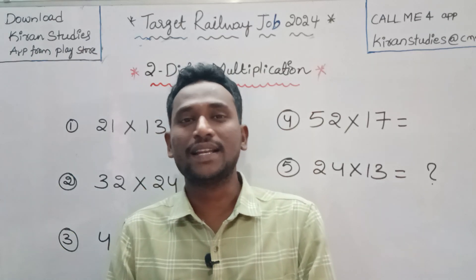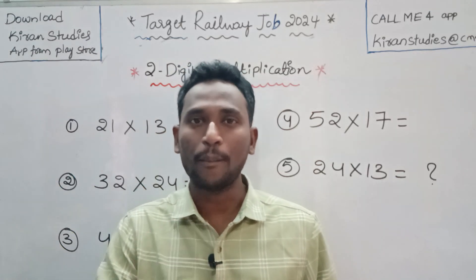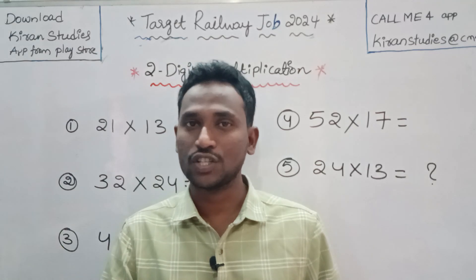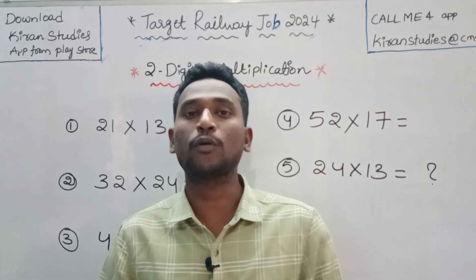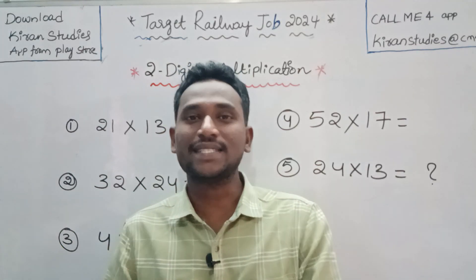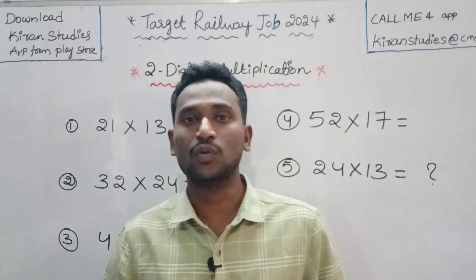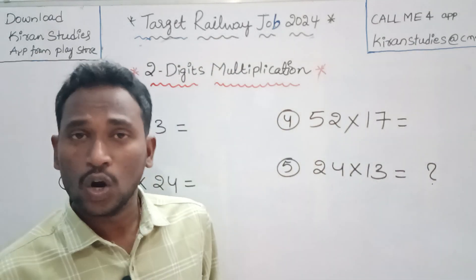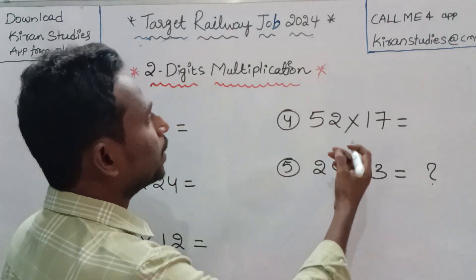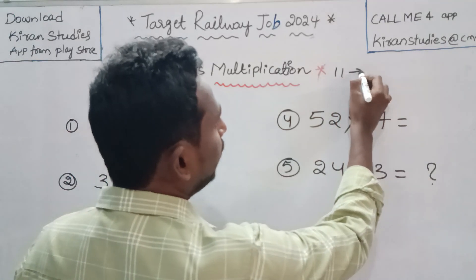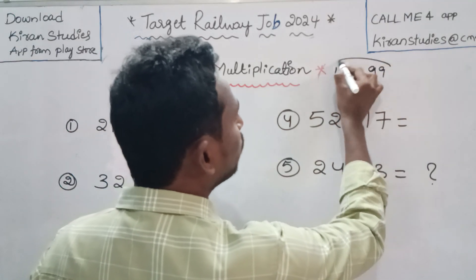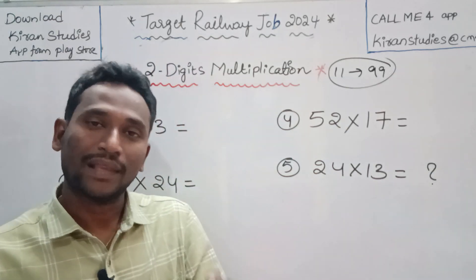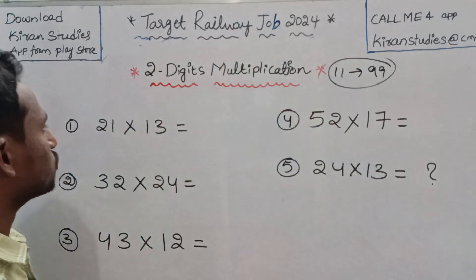So speed math is very important. In any competitive exam, we have a lot of multiplication, and up to 20 tables, so within seconds. In this video, we have two-digits multiplication, which means from 11 to 99, any two-digit number. First of all, we have the answer to each number.